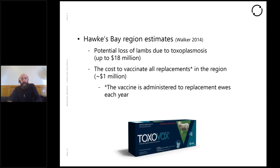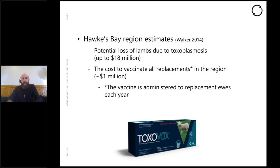In the Hawkes Bay region specifically, based on reports from 2014, potential loss of lambs due to toxoplasmosis was estimated at potentially up to 18 million dollars. The cost of vaccination of all replacements in the region could be up to one million dollars. The vaccine is administered to replacement ewes each year — it was developed for sheep in New Zealand about 20 years ago — but it's not 100% effective; some studies report potentially 85% effectiveness.